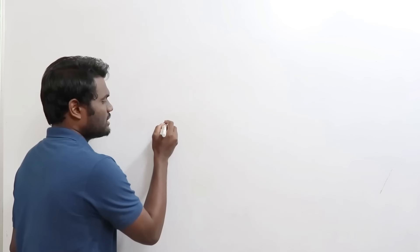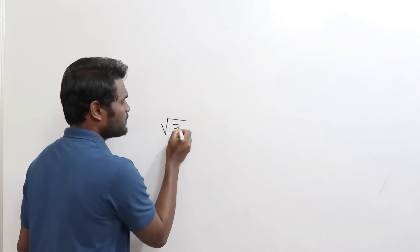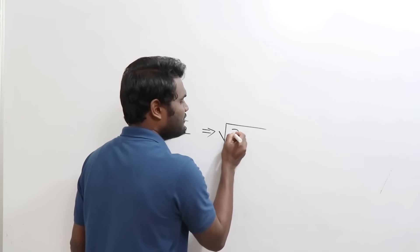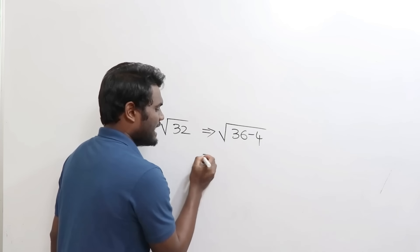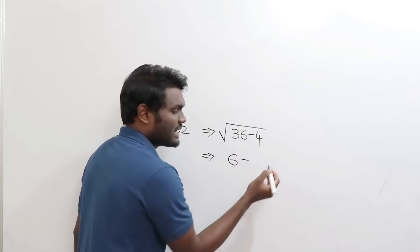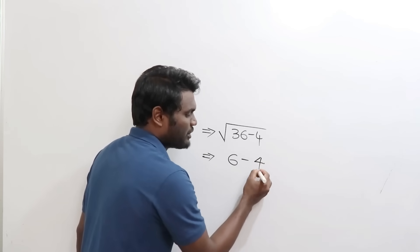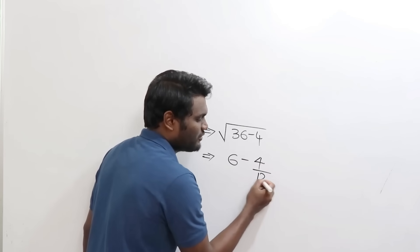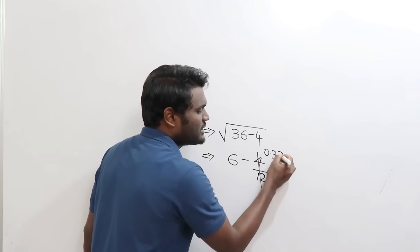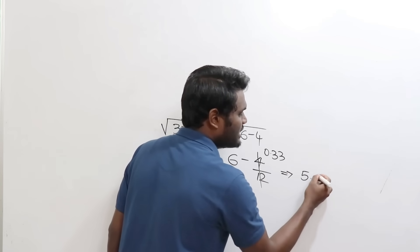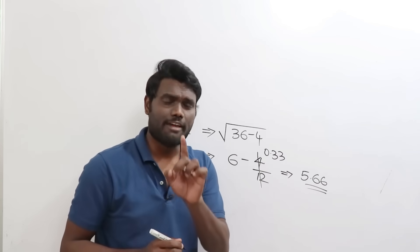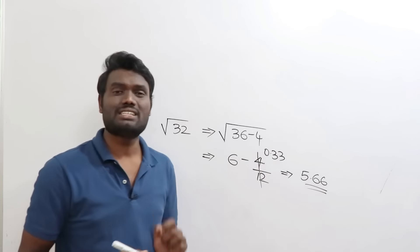Let us calculate square root of 32. I'll write 32 in terms of 36: this gives 36 minus 4. Square root of 36 is 6. As it is minus, write minus. Write 4 divided by double of 6, which is 12. 4 divided by 12 is 1/3 ≈ 0.33. So the value is 5.66. Square root of 32 ≈ 5.66.